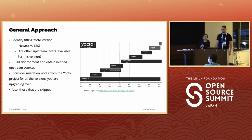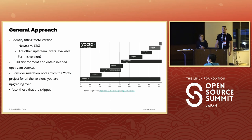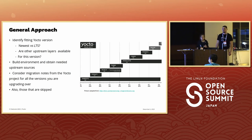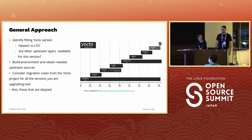Our next step was to upgrade our build environment. We build our system with a container, and we checked the Yocto development manual to see if any new packages were required. We put them all into our container and this went smoothly from the beginning — no major issues. Then we read through all the migration notes available in the Yocto development manual for the versions we are upgrading over, including versions we are skipping, to understand what has changed and where we need to adapt.